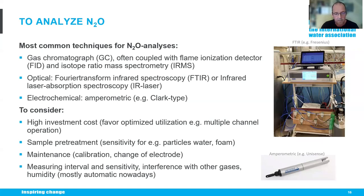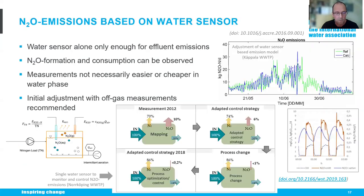Regarding water phase measurements, the water sensor is sufficient if you measure in the effluent of a wastewater treatment plant — you have the water flow and N2O concentration so you can quantify emission to the receiving water. Otherwise, water sensors are good to measure the formation and consumption of N2O in different processes, and by that you can ultimately control the process. Unfortunately, water phase measurements are not necessarily easier or cheaper — they require high investment and a lot of maintenance.